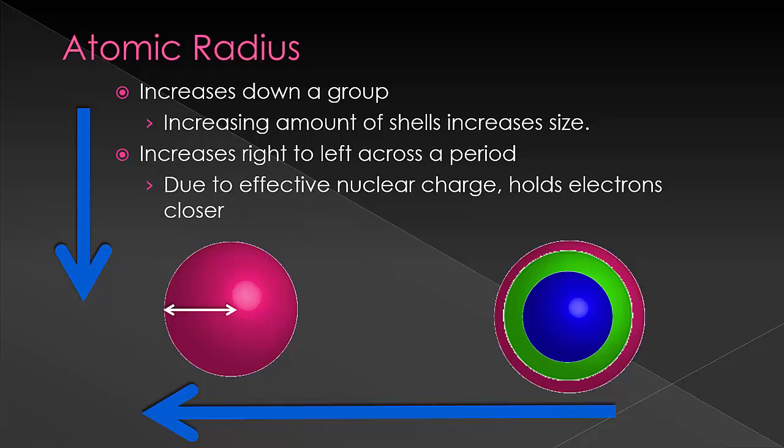However, as we go across the periodic table, we're not adding an entire other layer, and so there is no shielding. And so therefore, the effective nuclear charge is what changes the size.